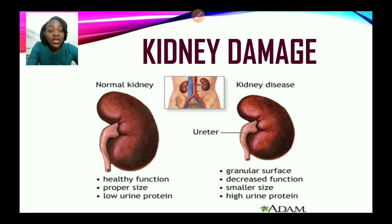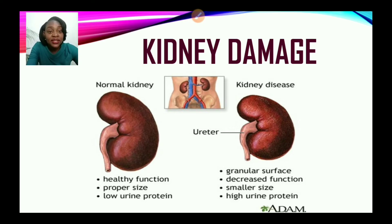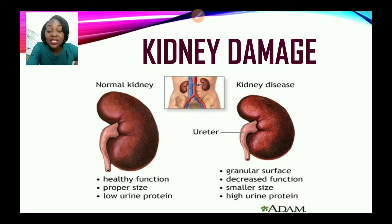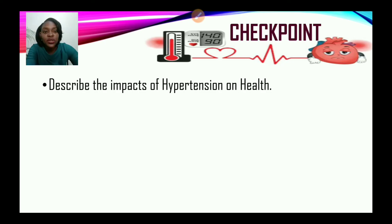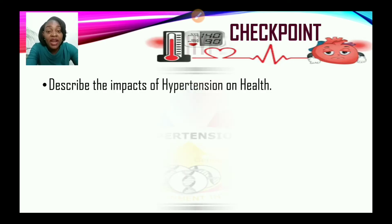As you can see in these diagrams, a normal kidney versus one that is affected: in the healthy kidney, healthy functioning takes place — proper size and low urine protein. The damaged kidney has a granular surface, decreased function, decreases in size, and persons also have high protein content in their urine. Checkpoint: describe three impacts of hypertension on health — heart attack, stroke, damaged kidneys, enlarged heart, damaged eye vessels, among others.